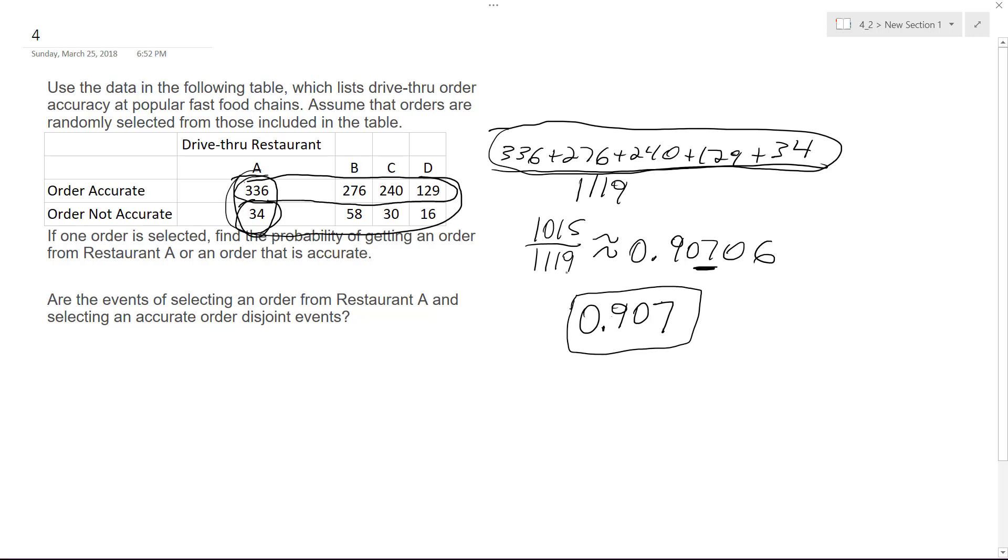All right, so this is the chance, or like a 90.7% chance of getting an order from restaurant A or an order that's accurate.